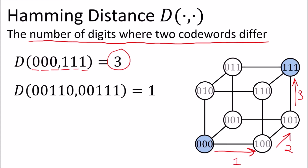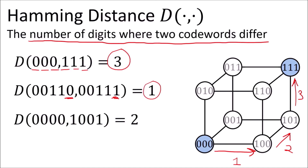With these two code words all the digits are the same except the last one, so the Hamming distance is one. And here there are two digits that are different, so the Hamming distance is two.